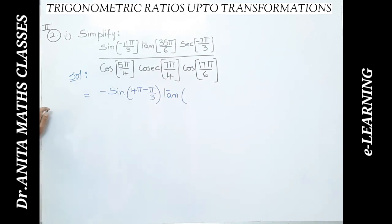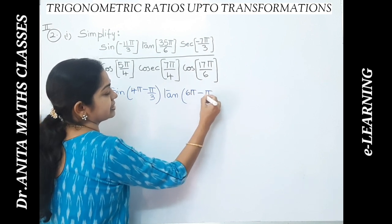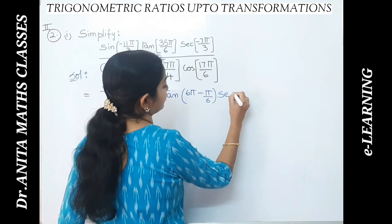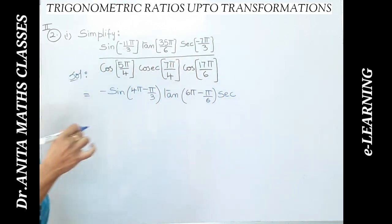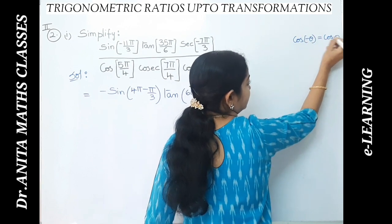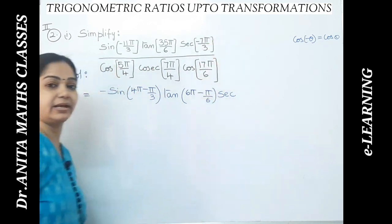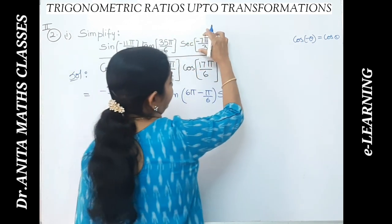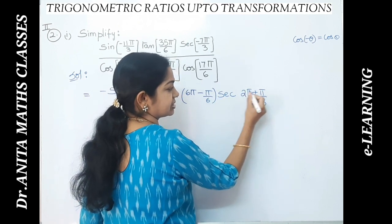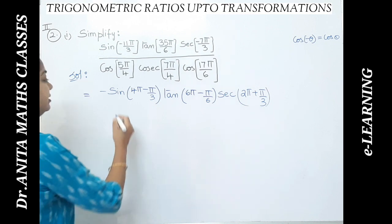We can write tan as 6π minus π/6 — since 36 minus 1 is 35π, which simplifies to 5π... and for secant of minus theta: cosine of minus theta equals cos theta, and similarly secant of minus theta equals secant theta since it is the multiplicative inverse. So 7π can be written as 2π plus π/3, giving 6 plus 1 = 7π. The minus goes off because secant of minus theta is just secant theta.